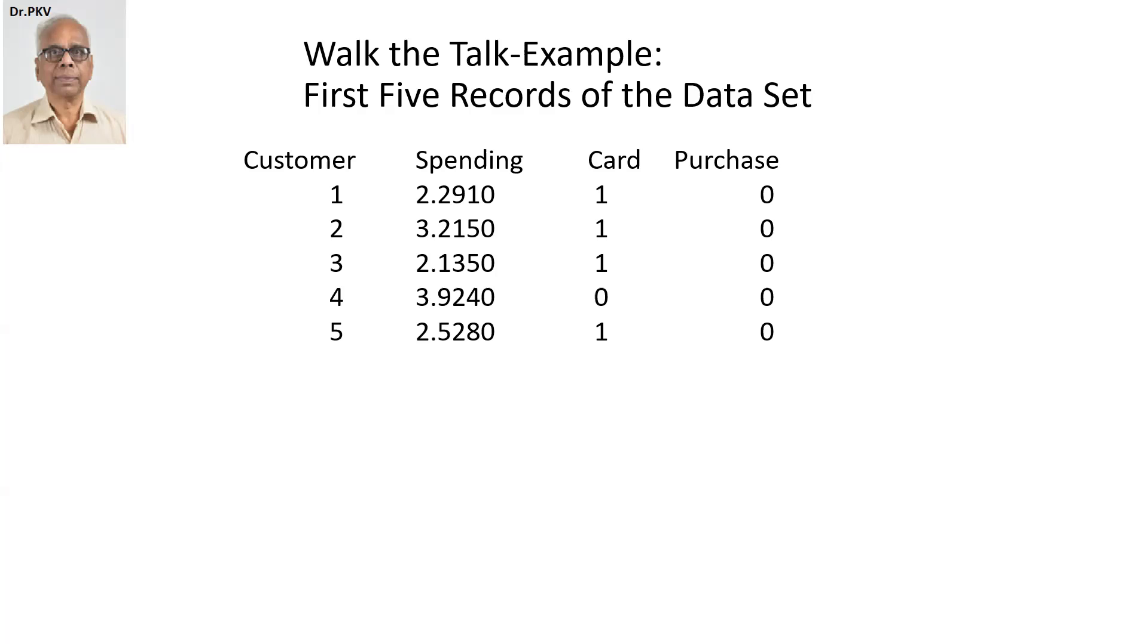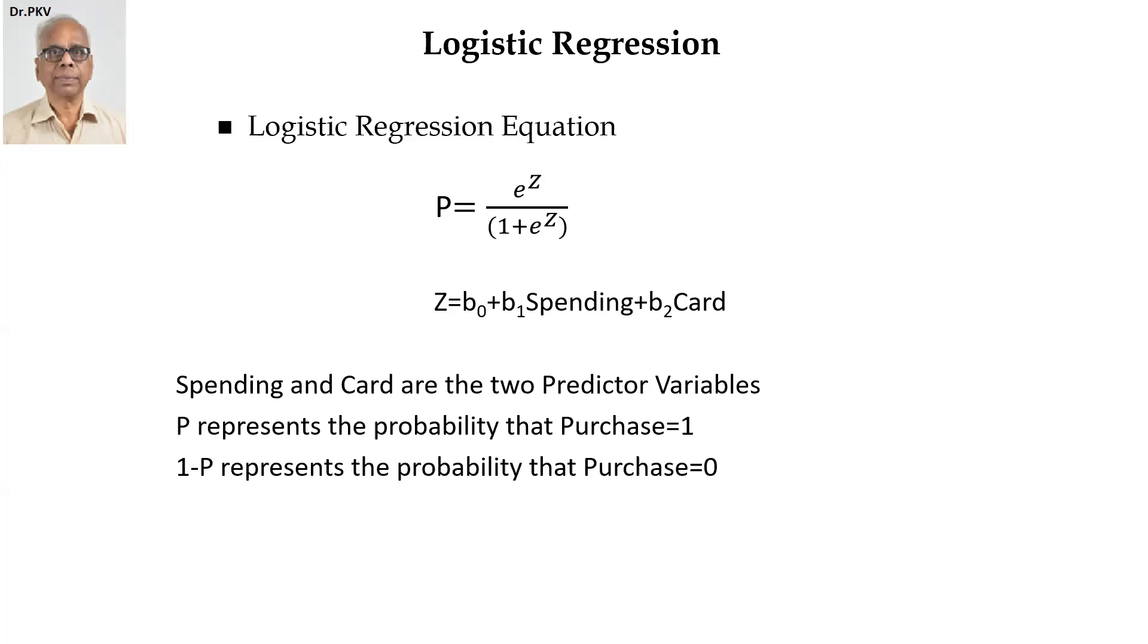Now, there are six crucial steps in understanding logistic regression. And I will discuss them in the particular order in which it should be discussed. First, the logistic regression equation: probability P is given by e raised to the power z divided by one plus e raised to the power z.